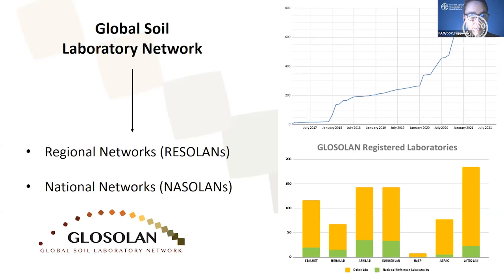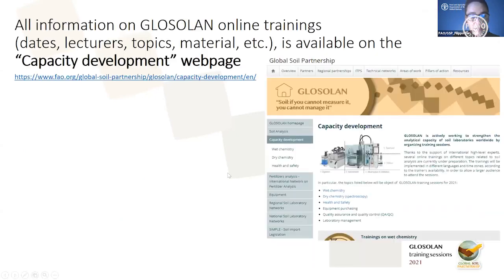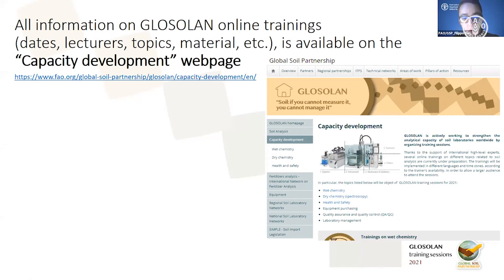Activities include capacity development sessions, internal and external quality control, and harmonization of procedures. On our website you can see all the different topics GLOSOLAN covers: quality control, standard operating procedures, and capacity development webinars on wet chemistry, dry chemistry, soil spectroscopy, health and safety, and quality assurance. We also take care of fertilizer analyses via the INFA network and support laboratories with equipment procurement and maintenance.